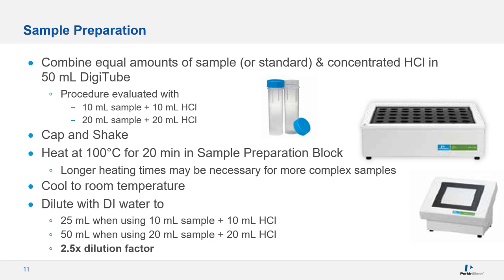After the 20-minute heating, samples were cooled to room temperature and diluted to final volume with deionized water. For 10 mL of sample, we diluted to 25 mL; for 20 mL, we diluted to 50 mL — giving an actual 2.5x dilution. We found that performing the final dilution with deionized water gave better sensitivity, more consistent results, and lower detectable levels compared to analyzing at the undiluted 1:1 sample-to-HCl ratio.